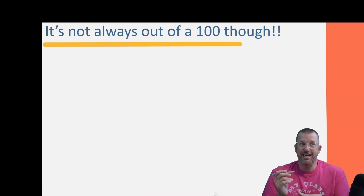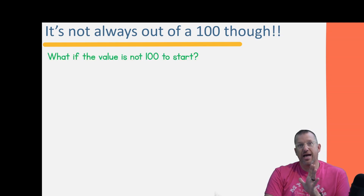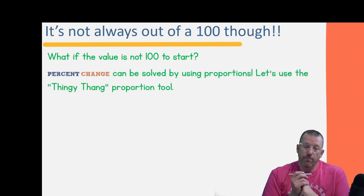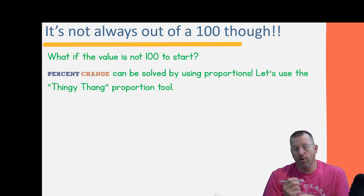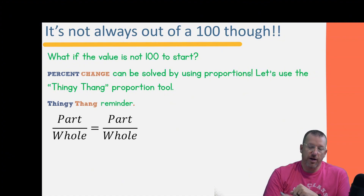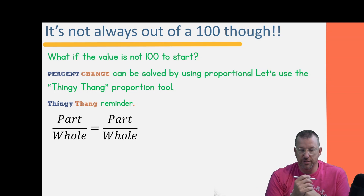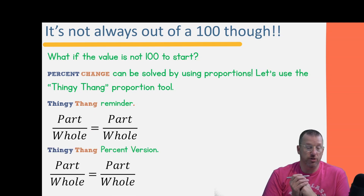But what if it's not 100? If I had 75 pencils at the beginning of the week and someone gave me 14, the percent change is not simply 14 — it's different. Percent change can be solved using proportions. We use the 'thingy thang' proportional tool. If you haven't seen that video, check it out!